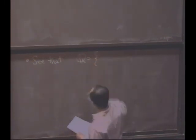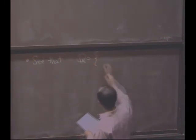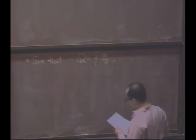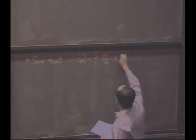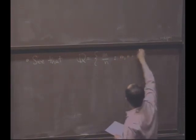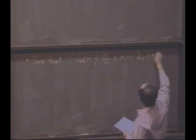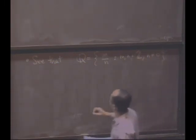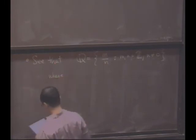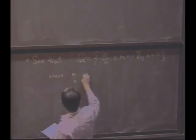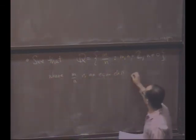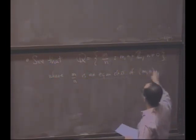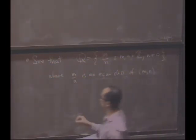Q is the set of all, let's say, M over N. Again, these are equivalence classes such that M, N, are in Z, N is not zero, where M over N is an equivalence class of, is the equivalence class of M comma N with the relation, what relation?